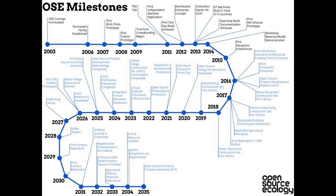Starting with the overview picture of where OSE is today — things like the roadmap and where we stand right now. The concept is that to complete a project like the Global Village Construction Set, where we design and build open source industrial machines, a new operating system for civilization to recreate manufacturing and recreate a new economy, designing these machines and posting the plans online for free requires a lot of people.